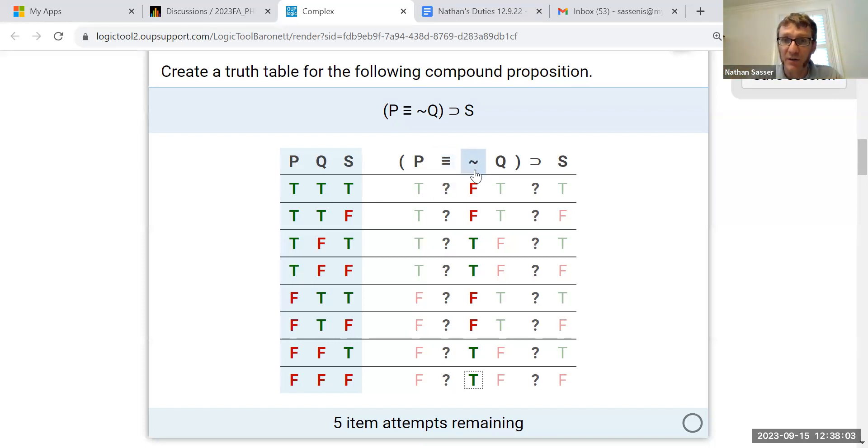So we're looking at this column and the P column, the negation column and the P column. And so the first line is false, second line is false. Oh, we got two trues, so that's true. Two trues makes it true. Two falses makes it true. And then these last two are false, false.